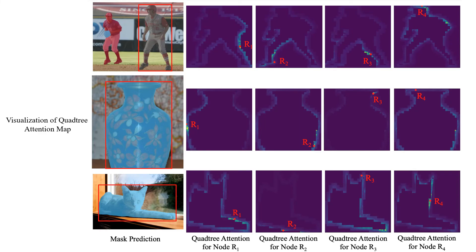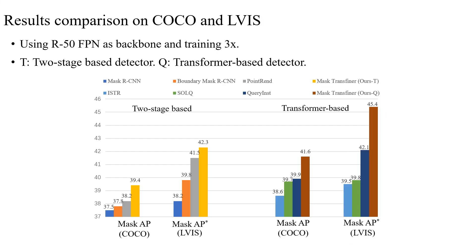We make a visualization on the quadtree attention-weight distribution; quadtree nodes with higher appearance or positional similarity have larger attention weights attending between them. For quantitative comparisons using COCO and LVIS annotations, using ResNet-50 and training for 27 epochs, Transfiner obtains consistent large performance advantages on both two-stage and Transformer-based detectors.